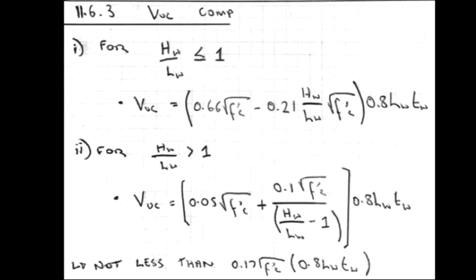Section 11.6.3 gives us the VUC comp, which is the shear strength of the concrete. For the case where the height of the wall divided by the length of the wall is less than 1, so this would be a very long wall, it's 0.66 times the strength of the concrete minus 0.21 height of the wall divided by the length of the wall times the strength of the concrete, as a function of the length of the wall and thickness of the wall.